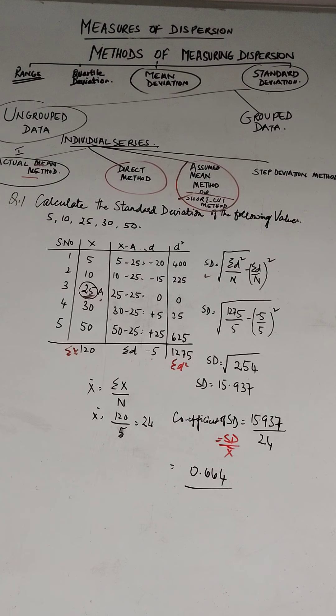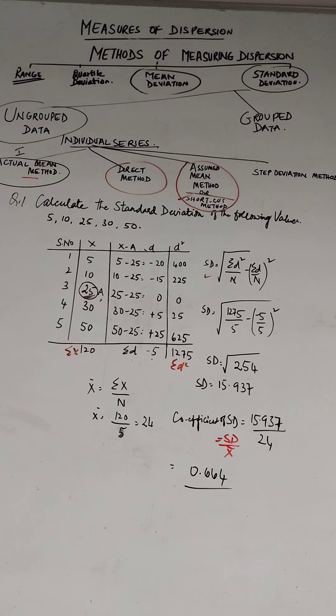So this is the shortcut method. Once again, I hope you have made a note of it in your notebooks. For your homework, you must open your books and do one standard deviation from the ungrouped data or from the individual series.